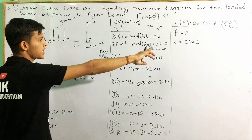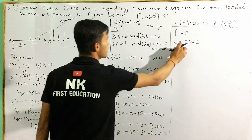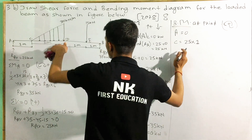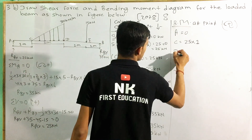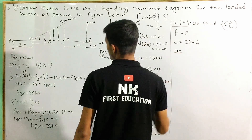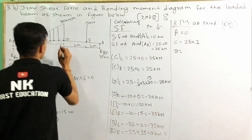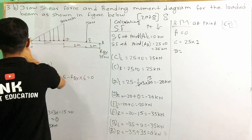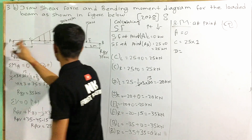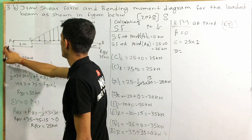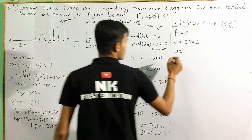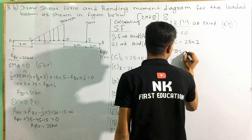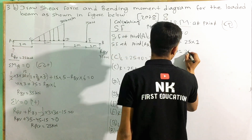If we draw D, then we draw A. If we draw D, then we draw A — this is D, then we draw A. If we draw D, then it is 35. I will add the positive value.